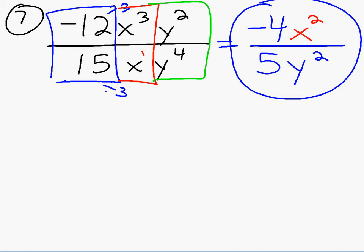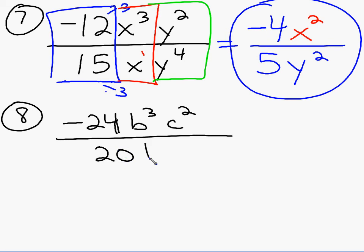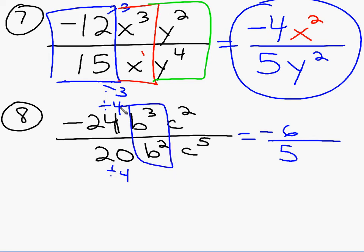Let me give you a problem like that to try on your own. Negative 24b to the third c squared over 20 b squared c to the fifth. Let's pause the video and you try that. On the top and bottom, I can divide both by 4, so that leaves me with negative 6 over 5. With the b to the third and the b to the second, I just subtract. 3 minus 2 is 1. So I have a b to the first on top. And then with the c's, 5 minus 2 is 3, but the c to the third is going to be on the bottom.